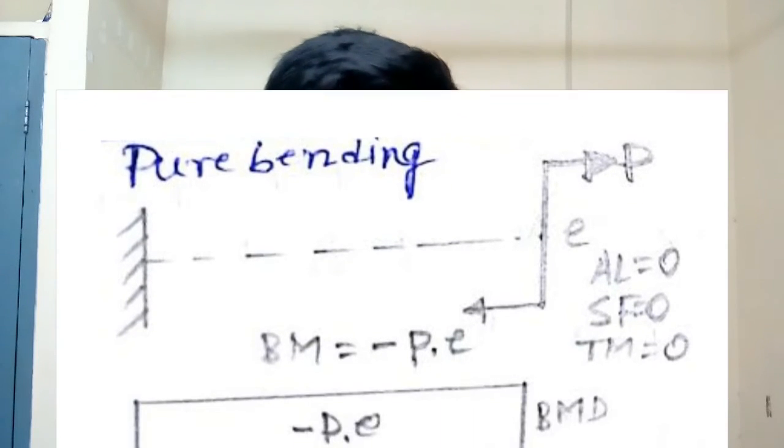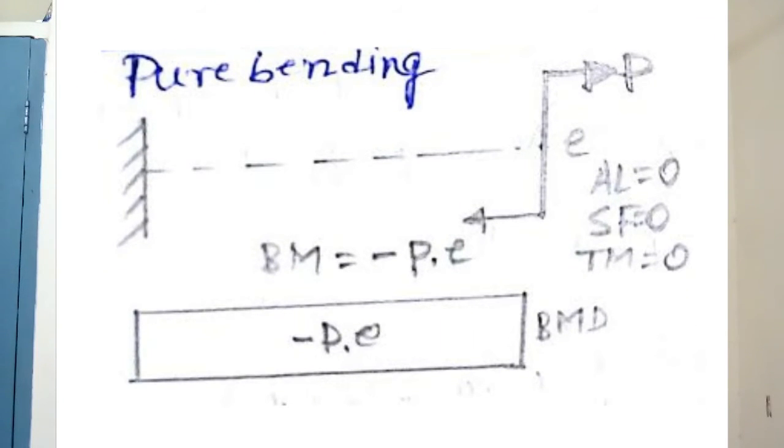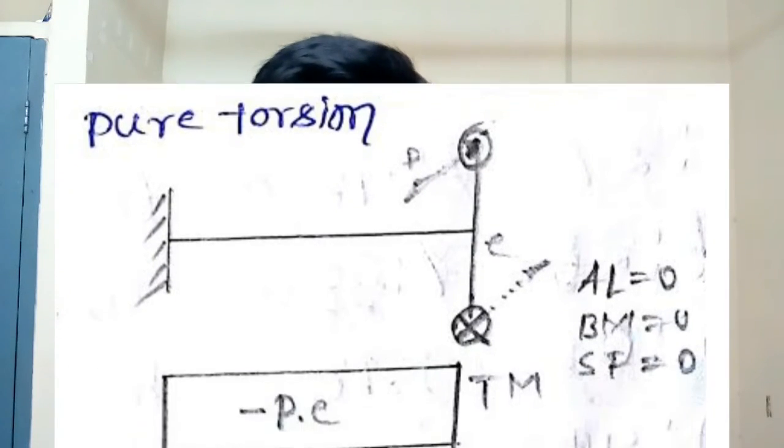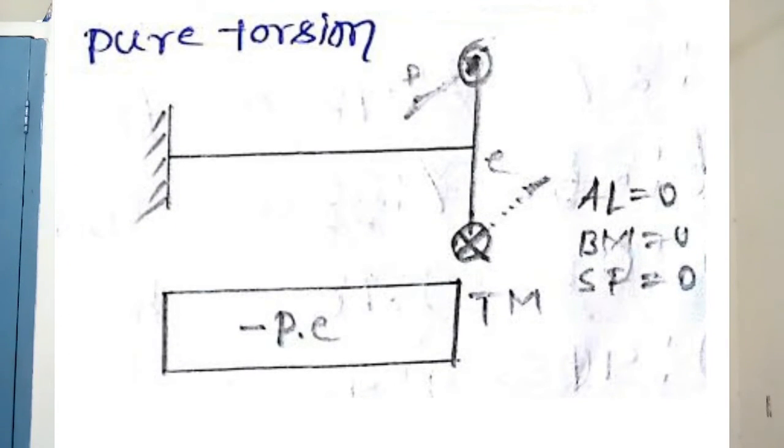For pure axial loading the load acts along the longitudinal axis. Pure bending occurs when equal and opposite loads act in a particular plane in such a way that they try to bend the component — the component bends due to that equal and opposite loading condition. When equal and opposite loads try to twist a member, the effect is called a pure twisting moment.